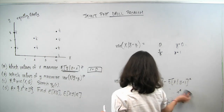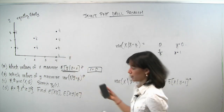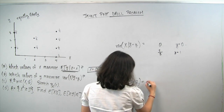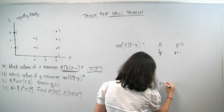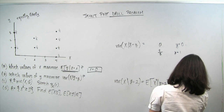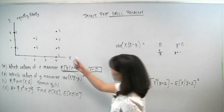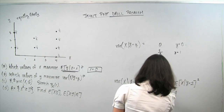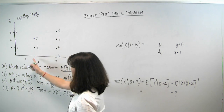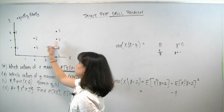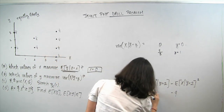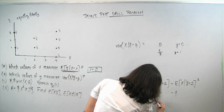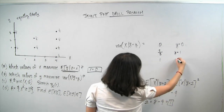Moving on to y=2, we use the same formula: E[X² | Y=2] − (E[X | Y=2])². Conditioning on y=2, the expectation of x is 3 by the center of mass argument, so we subtract 3²=9. X² can take on a value of 4 or 16 with equal probability, giving (4+16)/2 = 10. So 10 − 9 = 1. The conditional variance when y equals 2 is 1.